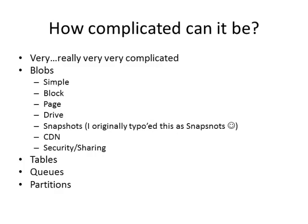So, what types of storage are there? There's blobs — blobs are basically just a chunk of data. They can be simple, block blobs, page blobs, or drive blobs. You can have snapshots of blobs, put blobs through a content distribution network, and there are also issues about security and sharing. There are tables, which aren't SQL tables — they are effectively a NoSQL table. There are queues, and there are partitions. You can't use them directly, but if you're aware of what a partition is, you'll understand how to get the most out of storage.